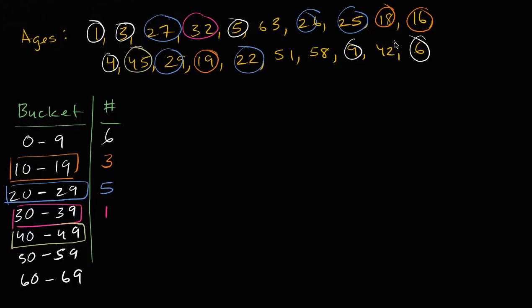What about 40 to 49? We have one, two people. Two people are in that bucket. And then 50 to 59. So you have one, two people. And then finally, ages 60 to 69. There is one person right over there.